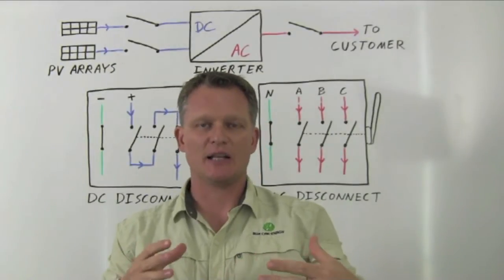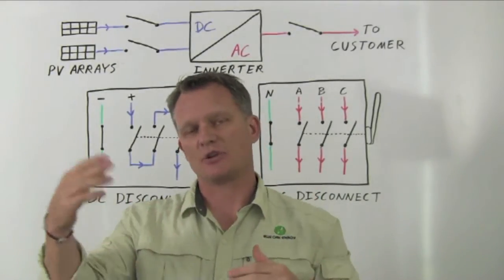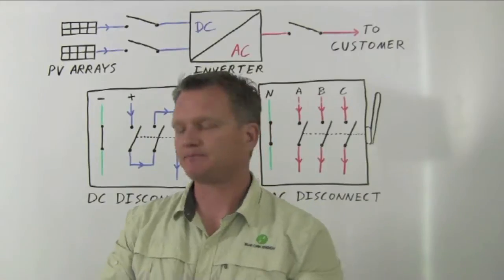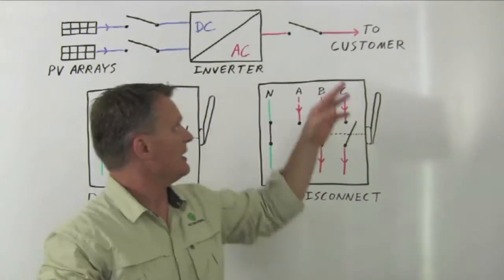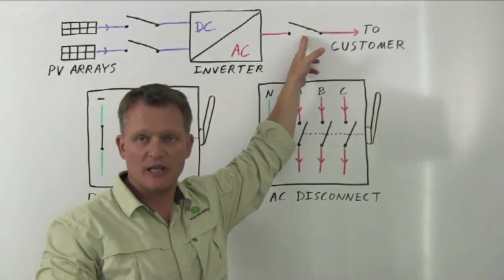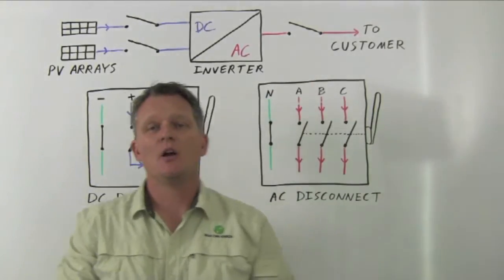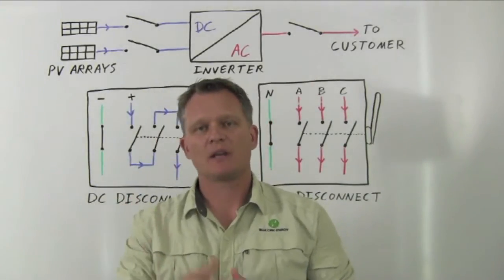Now, the reason we need disconnect switches is to isolate components of the system for safety and maintenance purposes. Here we're showing disconnect switches on the DC side and a disconnect switch on the AC side. When we want to break these circuits while the system is operating, we call that load break.